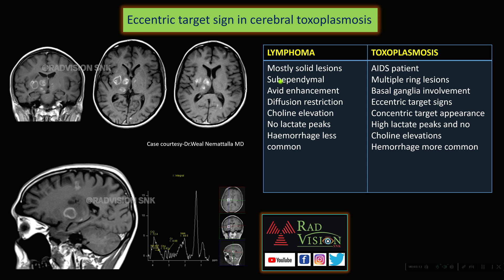In lymphoma, there will be mostly solid lesions, subependymal involvement, evident enhancement, diffusion restriction, choline elevation, no lactate peaks, and hemorrhage is less common. In toxoplasmosis, there are multiple ring lesions commonly involving the basal ganglia, with eccentric or concentric target signs, high lactate-lipid peaks, no choline elevation, and hemorrhage is more common. These are the differentiating points that help distinguish lymphoma from toxoplasmosis.